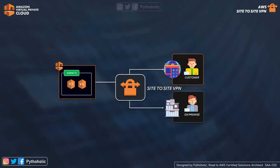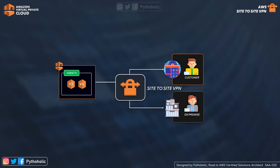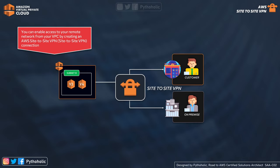When it comes to hybrid architecture, we mostly think of having part of our infrastructure hosted on the cloud and the other part on our own on-premise servers. When you hear the term Site-to-Site VPN, the focus should be on VPN — a virtual private network. VPN connectivity utilizes the public internet, which can have unpredictable performance and, despite being encrypted, can present security concerns. The Site-to-Site VPN helps enable access to your remote network from your VPC by creating a Site-to-Site VPN connection.